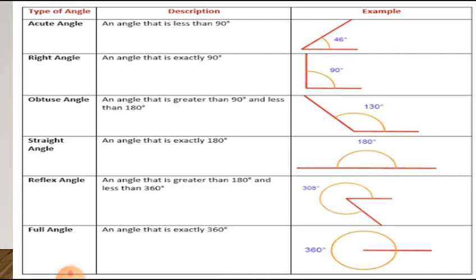What is acute angle? An angle that is less than 90 degrees is called the acute angle. And what is right angle? An angle that is exactly 90 degrees is called the right angle. And what is obtuse angle? An angle that is greater than 90 and less than 180 degrees is called obtuse angle.